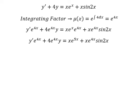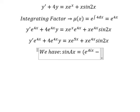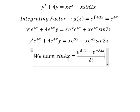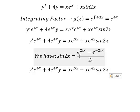Next, we have the formula: sin(Ax) equals e to the power of Aix minus e to the power of negative Aix, all over 2i. So capital A we replace with number 2, so we need to transform sin(2x) into this form.